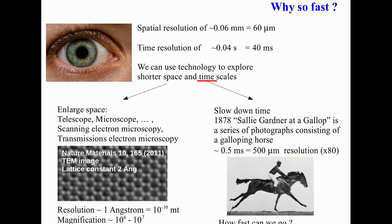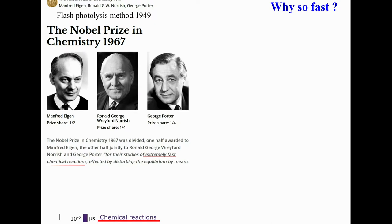This was the first result, and how fast can we go? I represent a few important moments. This is the Nobel Prize given in 1967 for the invention of the photolysis method. It enabled the observation of chemical reactions at 10 to the minus 6 seconds or 1 microsecond.